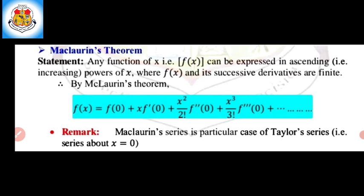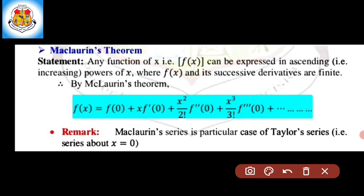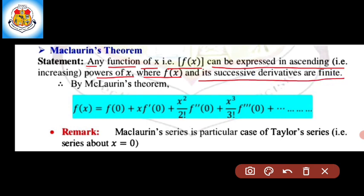To find the Maclaurin series expansion of the function f of x, we first see the statement of Maclaurin's theorem. The statement is: any function of x, that is f of x, can be expressed in ascending — that is, increasing — power of x, where f of x and its successive derivatives are finite.